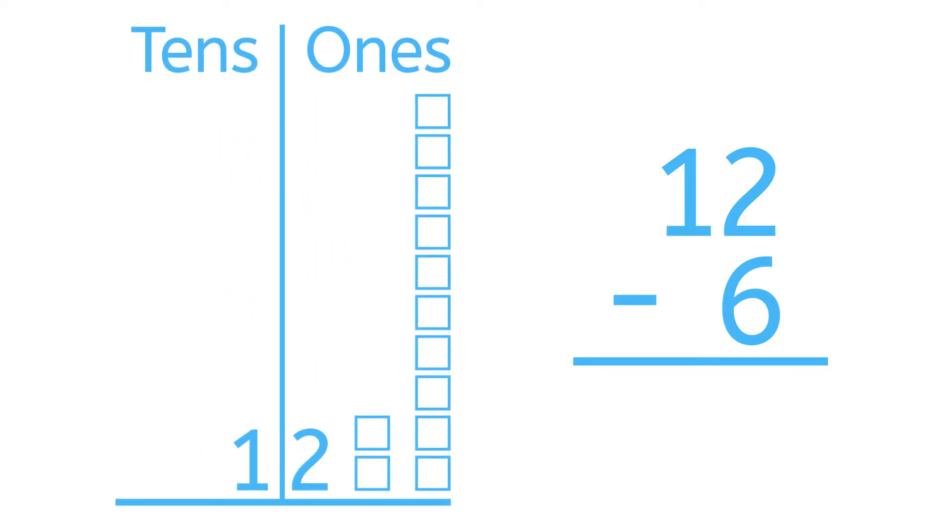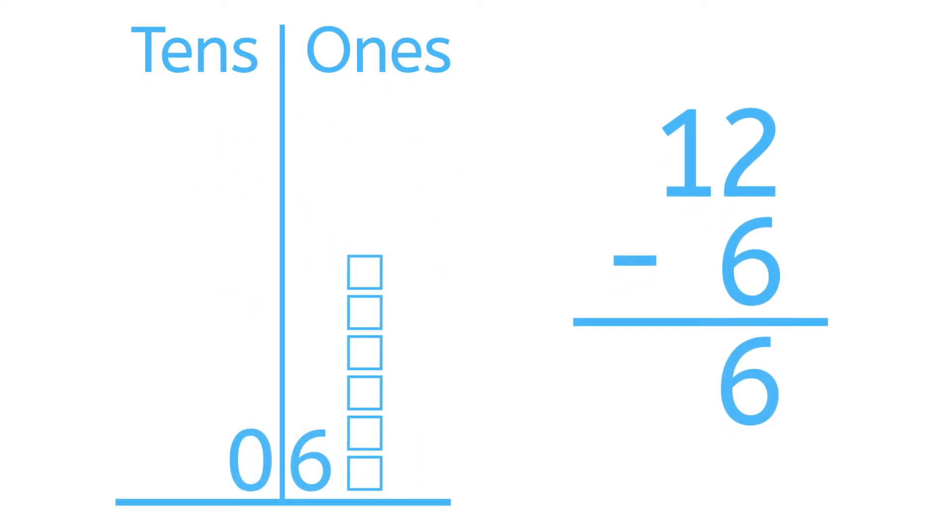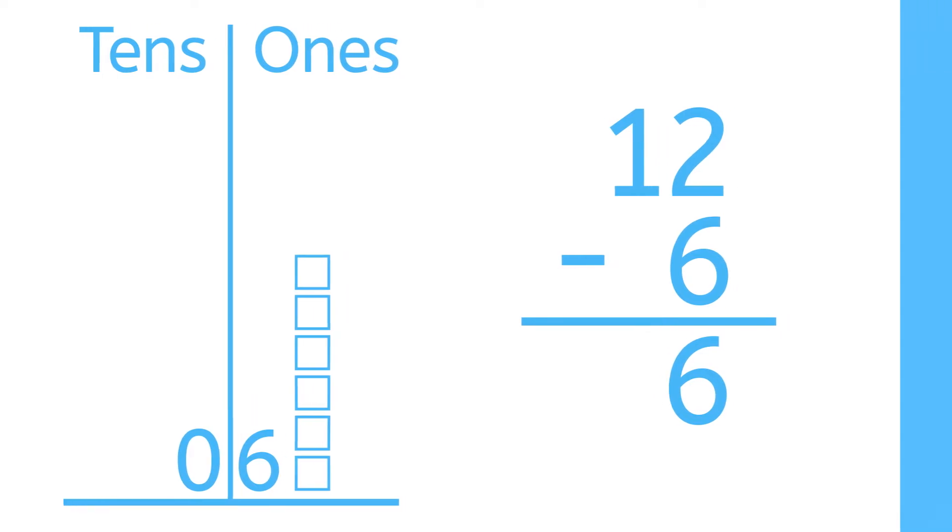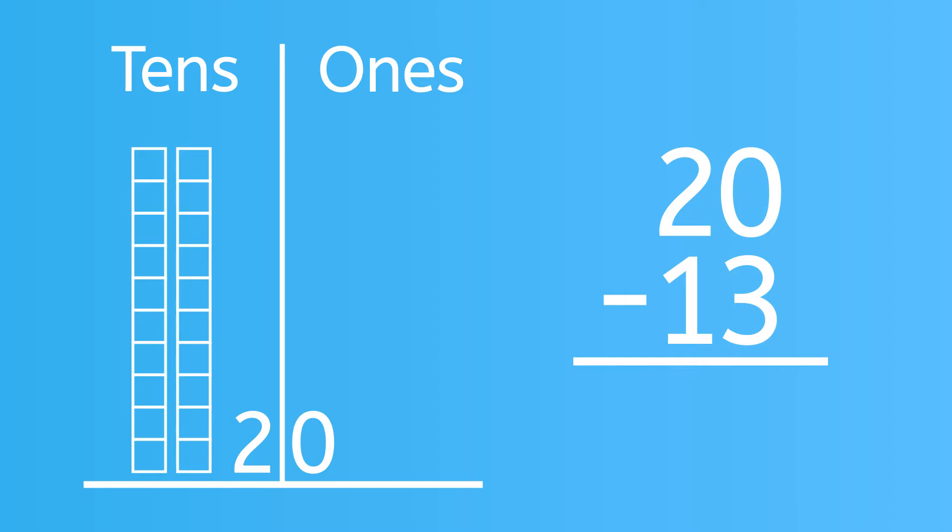See? 12 minus 6 is 6. Let's try one more problem. We told you we learned to work problems up to 20. This problem starts with 20, or 2 blocks of 10.